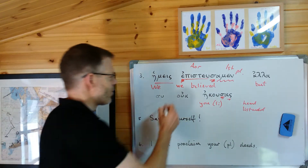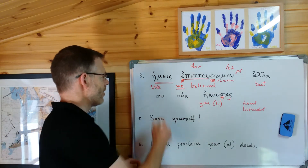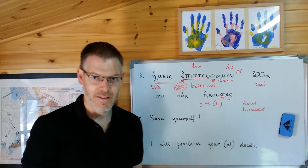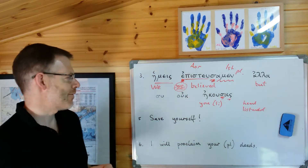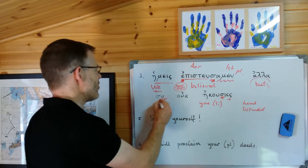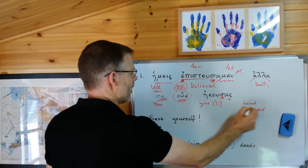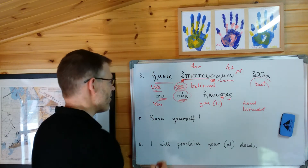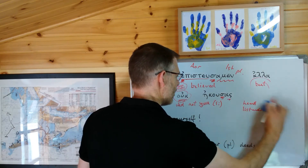Well, why would you want that? Because we've already got 'we' in 'we believed.' There's only one reason why you use a nominative pronoun in this kind of way — a first person pronoun — and it's to emphasise the 'we.' We believed, to contrast 'we,' the subject, with something else, which of course makes sense of the logic of the sentence. We believed, hemes epistusamen, alla — but, by contrast — su, second person nominative singular, you — ouk acusas — not heard or listened. So: we believed, but you did not hear or listen.